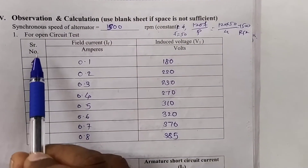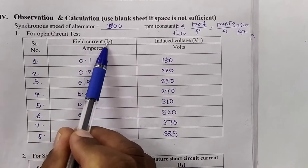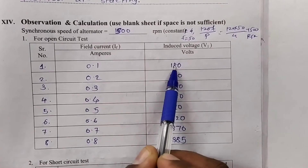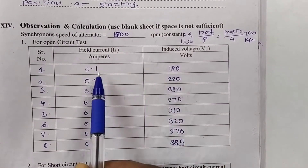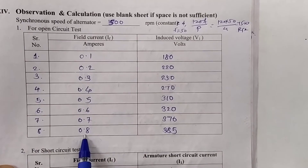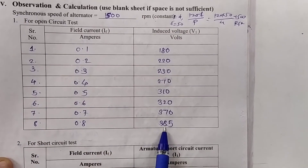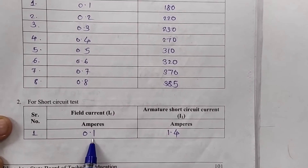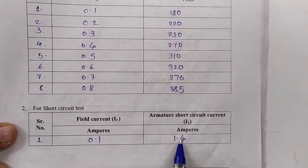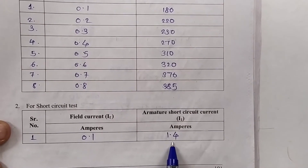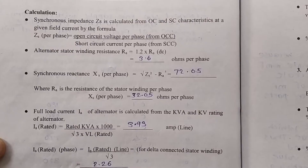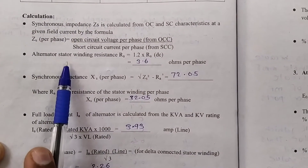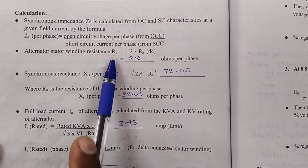From the open circuit test, the readings noted are: at field current 0.1 ampere excitation, the induced voltage at the armature is 180 volts. Consecutively we note down various readings up to 0.8 ampere — at 0.8 ampere, the voltage is 385 volts. For the short circuit test, when the field current is 0.1 ampere excitation, the armature short circuit current is noted as 1.2 amperes.